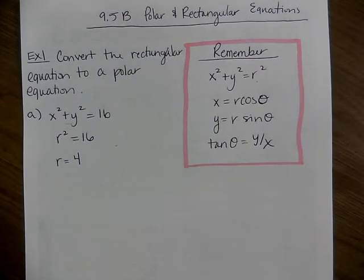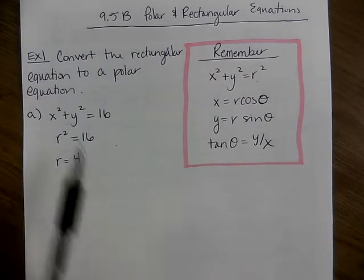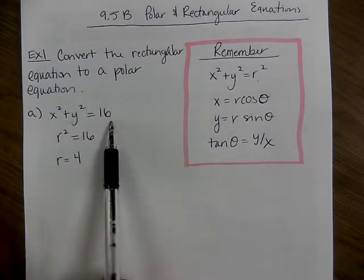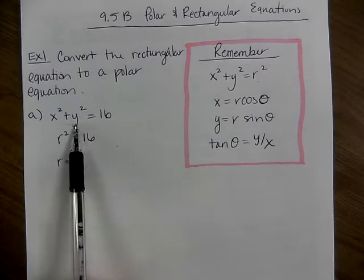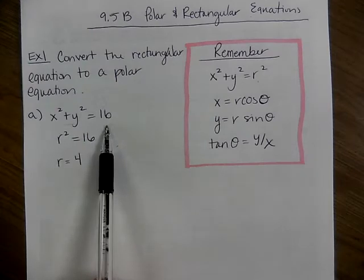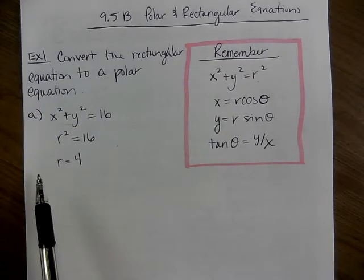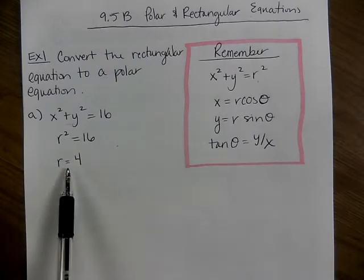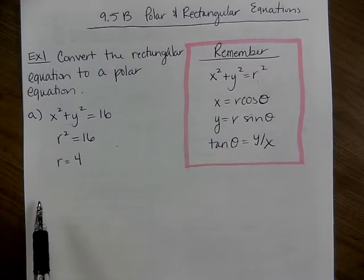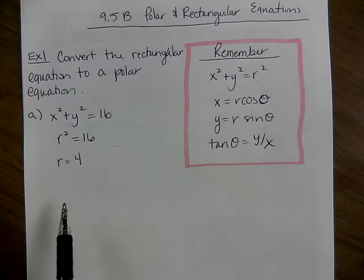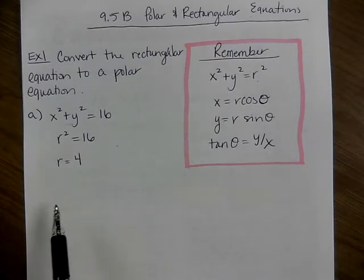Now think about what just happened here. This rectangular equation, what is it an equation of? A circle. And where is the center? The origin. And what is the radius? 4. So can you imagine a circle with a center of (0,0) and a radius of 4 graphed? Now I want you to imagine a polar graph. What does r=4 mean? It goes 4 out everywhere, right? So what would that form? A circle centered at the pole, which is the origin, with a radius of 4. Pretty cool, right?